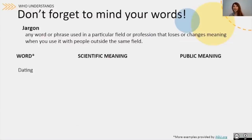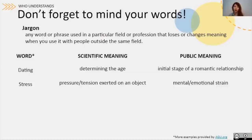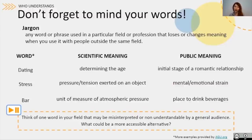Some examples: 'dating' — for a geoscientist, this probably means determining the age of a sample, maybe a rock sample, but more commonly it refers to the initial stage of a romantic relationship. Or 'stress' — generally a mental or emotional strain, but scientifically it can mean a pressure or tension exerted on an object. And 'bar' — a unit of measure of atmospheric pressure, but also where you go for drinks. Think about one word in your field that may be misinterpreted or not understandable to the general public, and try to find a more accessible alternative.